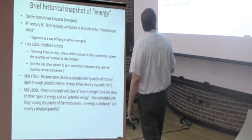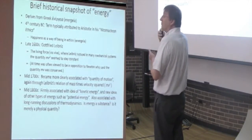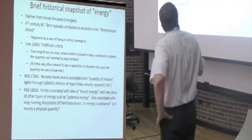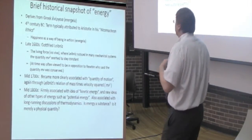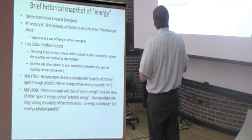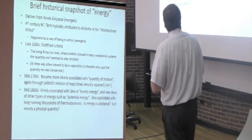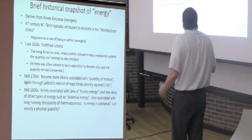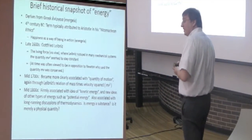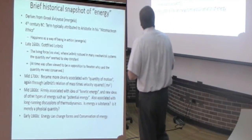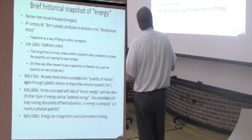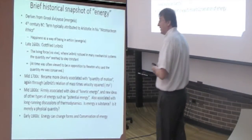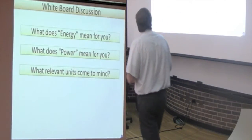In the mid 1700s, it became more clearly associated with this quantity of motion and connected through the mass times velocity squared part in terms of kinetic energy. And by the mid 1800s, it was really firmly associated with this idea of kinetic energy, energy of motion. And also some new ideas started to pop up. Energy was not just about motion, but about energy stored in different ways. For example, such terms as potential energy. It was also associated with long running discussions of thermodynamics. Is energy a substance? Is it a physical quantity? What is it? How does it manifest itself? So these are deep questions for the scientists of this time. And by the early 1900s, we really started firmly theoretically establishing what energy is and that it can change forms and some very interesting properties of energy in the world, such as conservation of energy.